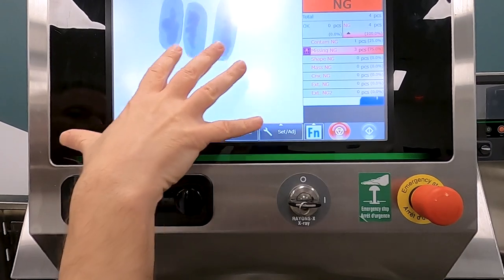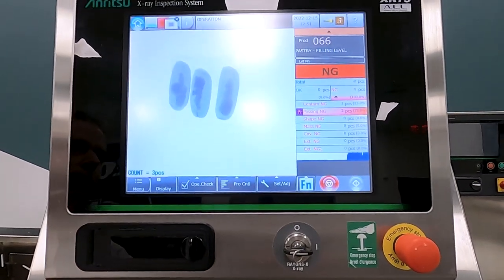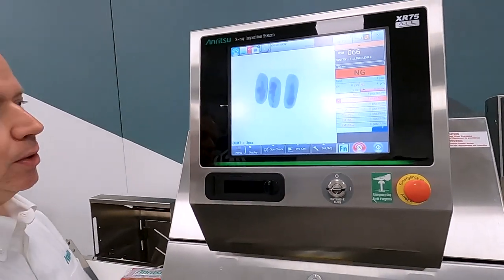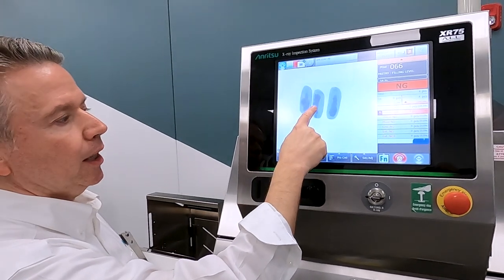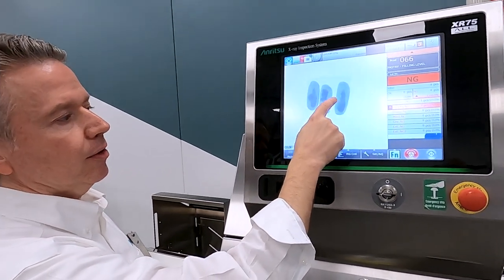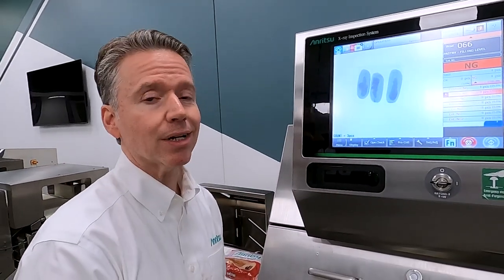So again, it doesn't really matter what this is. It could be a meat filled pastry. It could be a nice cake like this one. The ability to go in and count the cakes or count the filling levels, check the area and check the volume can all be done as well as contaminant detection at the same time. Thank you.